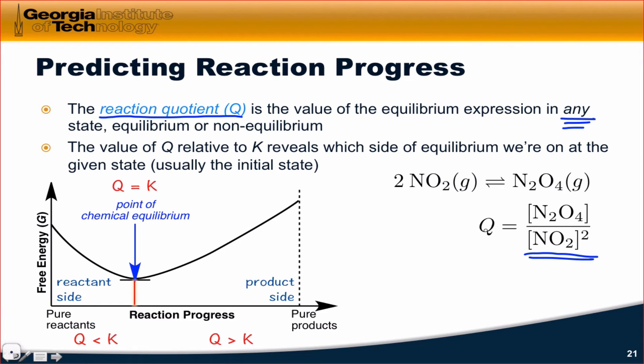If, on the other hand, we calculate Q and Q is less than K, then the reaction will spontaneously move forward. The rate of the forward reaction will be greater than the rate of the reverse reaction.